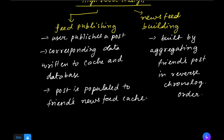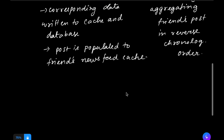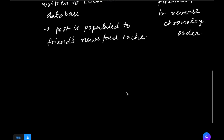For a client to communicate with the server, we use newsfeed APIs. These APIs are basically HTTP-based and allow our client to perform actions such as posting a status, retrieving the newsfeed, adding friends, and so on.